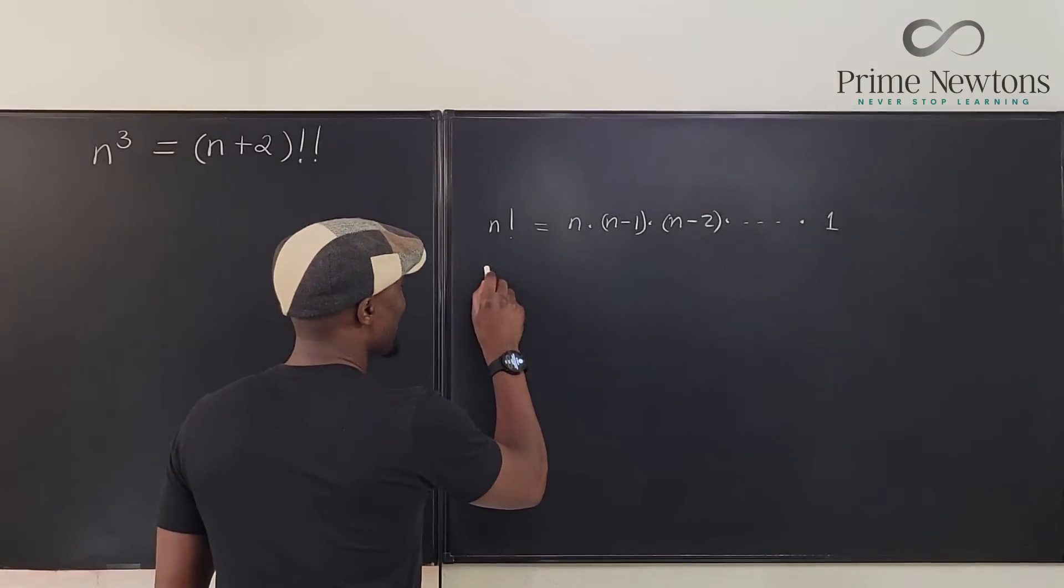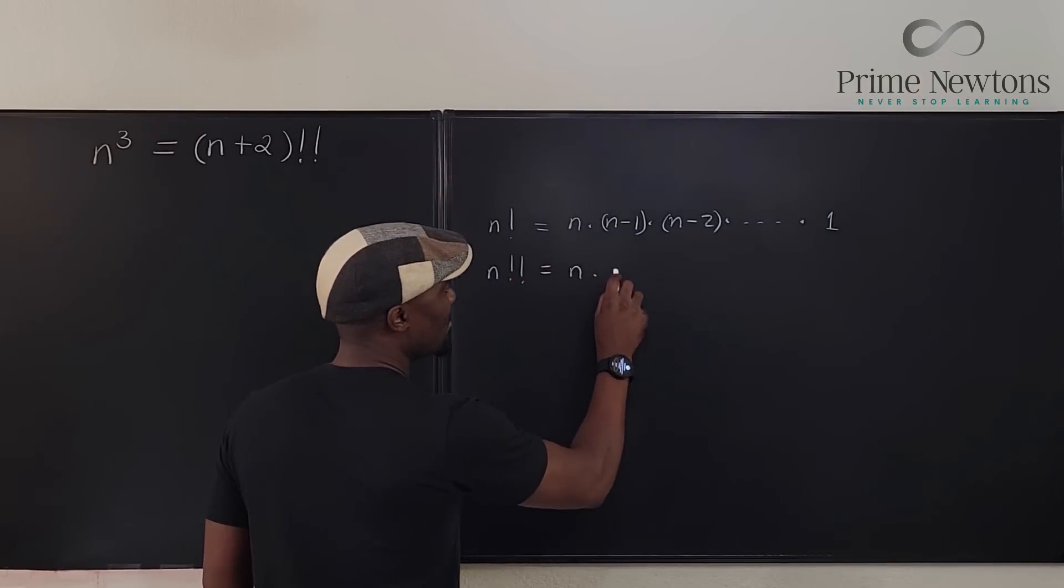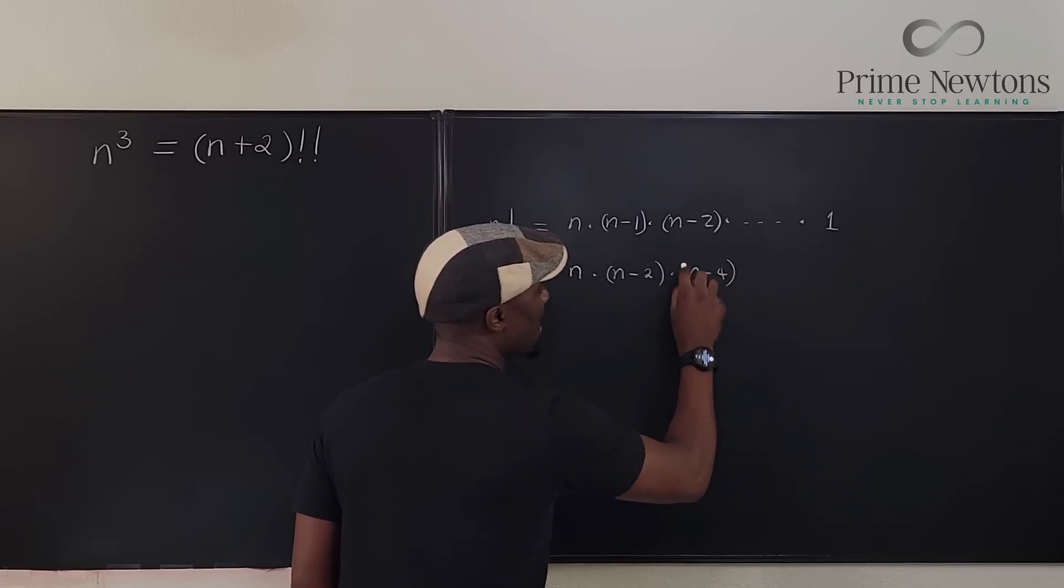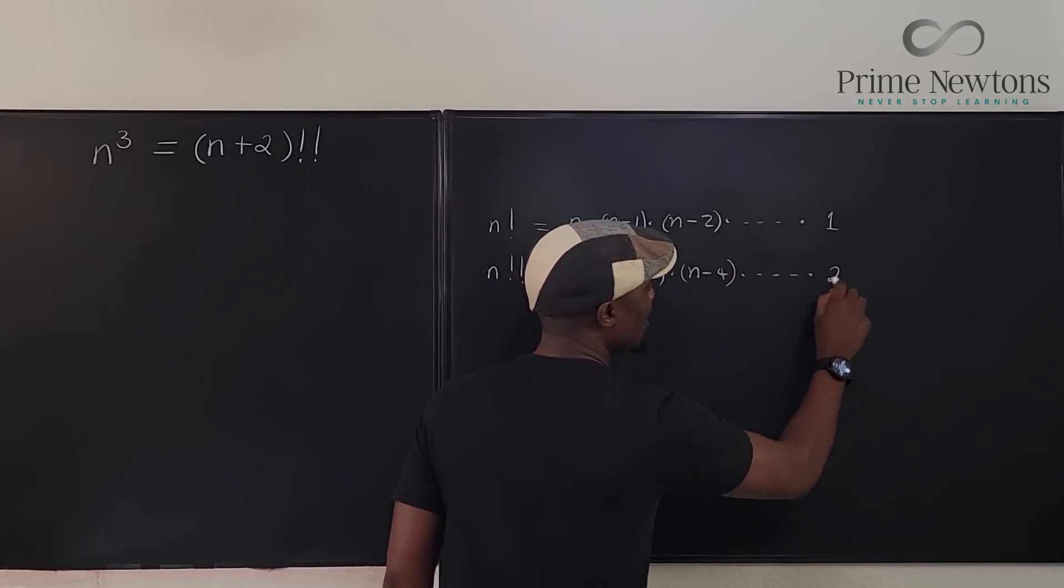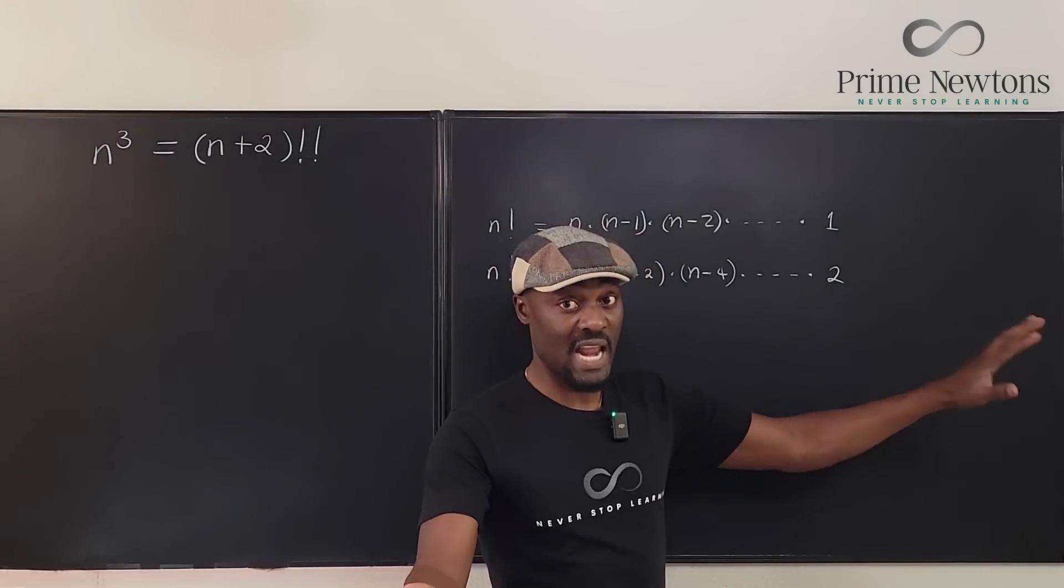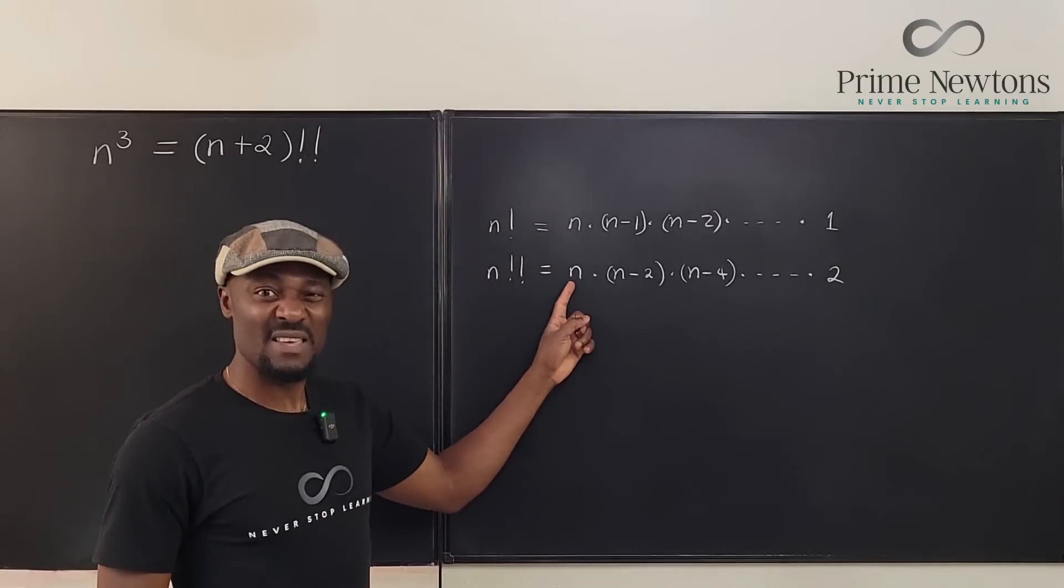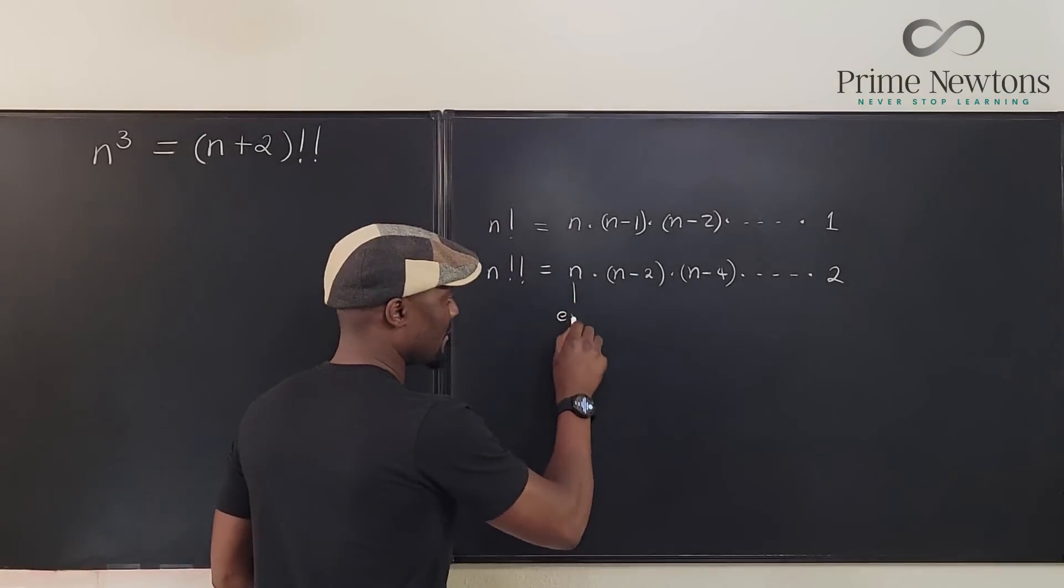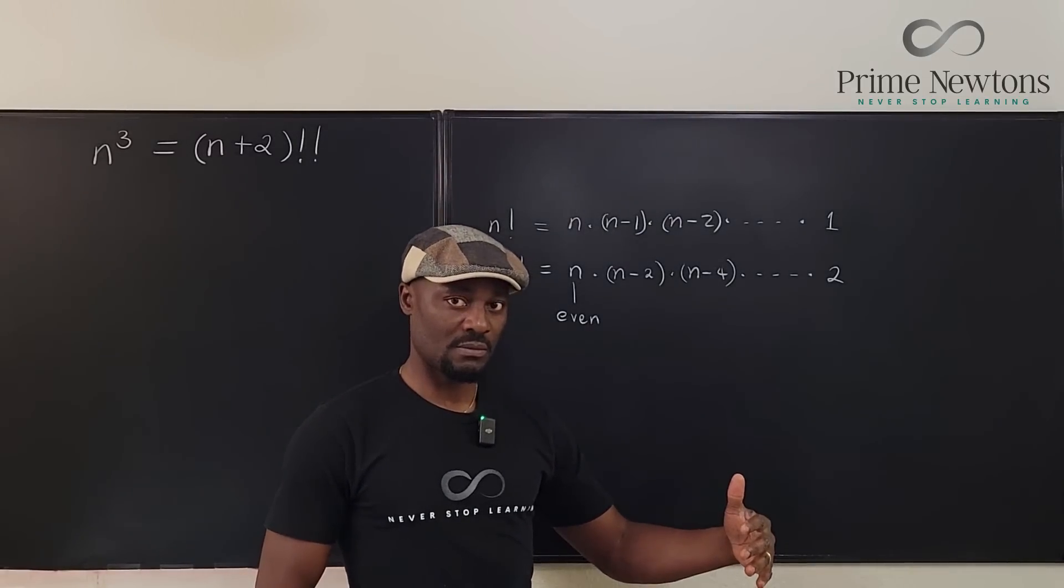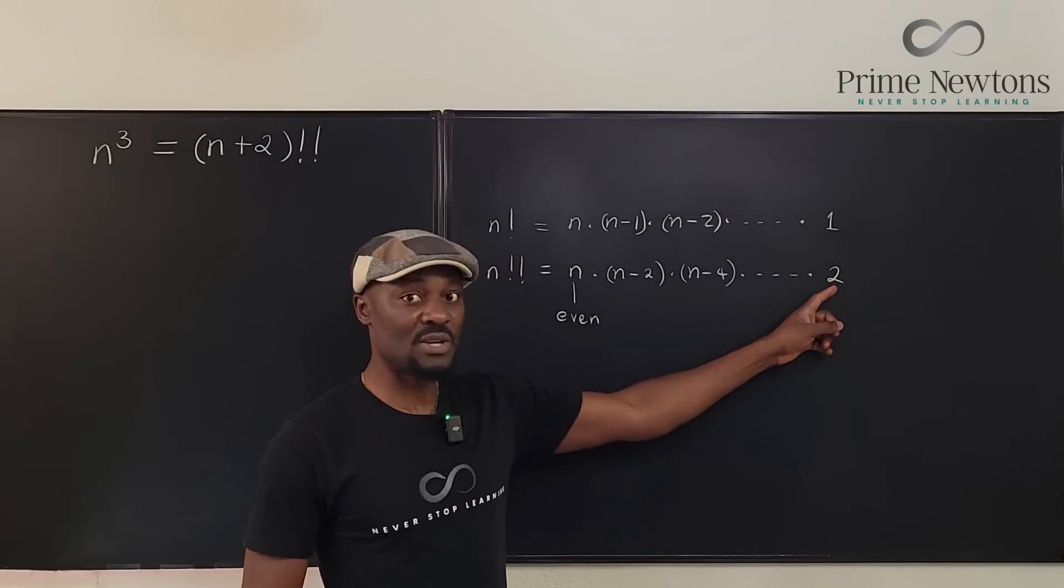So you're going to have, if you have n double factorial, your answer is going to be n times n minus 2 times n minus 4, and you go on like that until you get to 2. You stop at 2 because you won't go all the way to 0 because 0 is not a natural number. So we're going to end here. And this only happens if you start it with an even number. So if n is even.